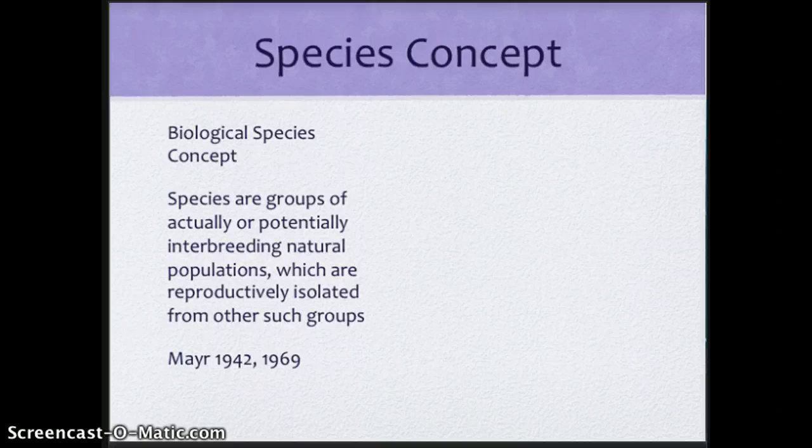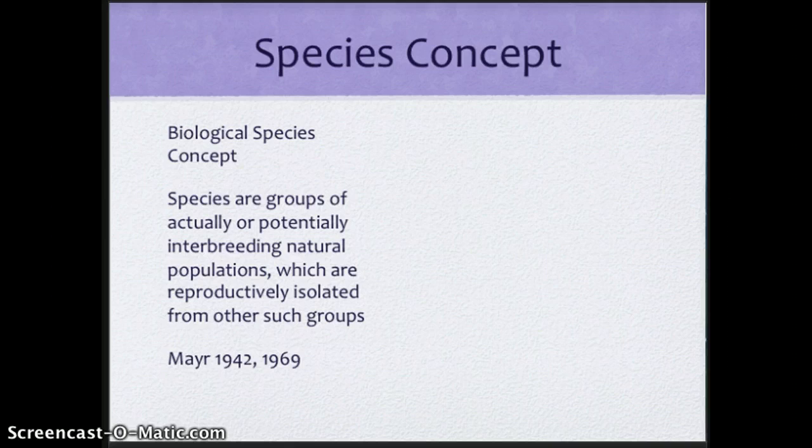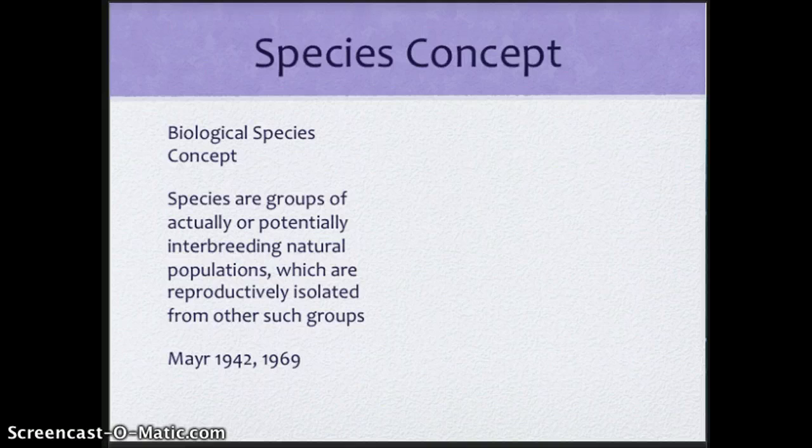And a lot of that comes down to, in Mayr's day, it came down to looking at physiology, looking at morphology, doing character studies. You know, you really had to look at species to determine if they were potentially interbreeding or if they were reproductively isolated. And a lot of that had to deal with morphology.